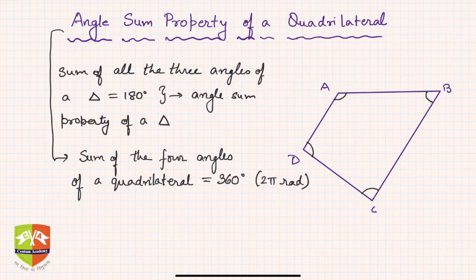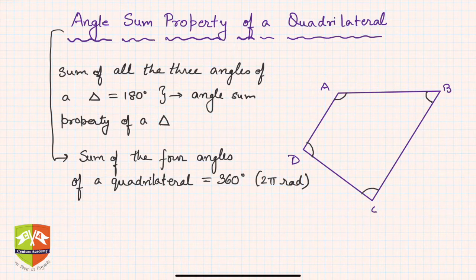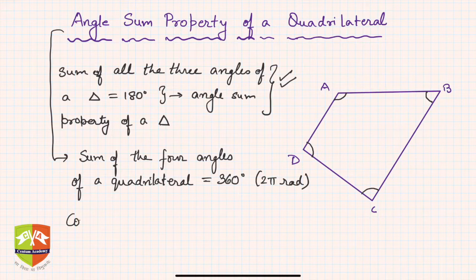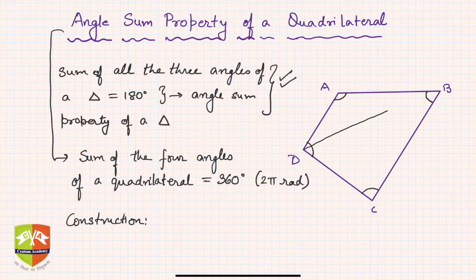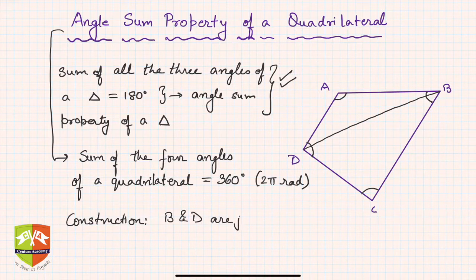Now let us understand how we arrive at this — let's try to prove this property. We will use the angle sum property of a triangle to prove the angle sum property of a quadrilateral. For the construction, we need to make two triangles, so we join B and D — the diagonal BD.